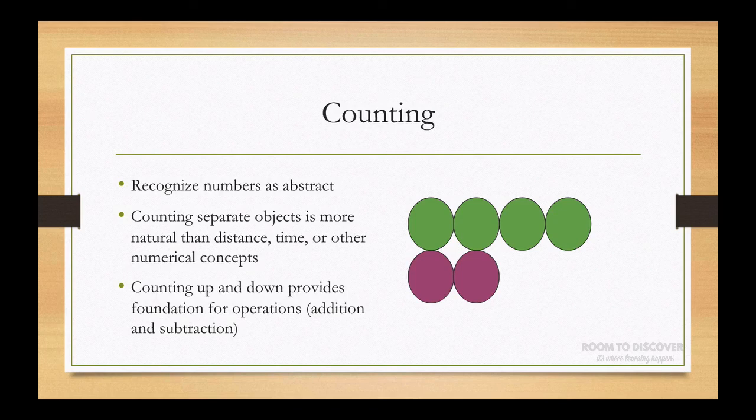When we're first introducing numbers, we start with counting. Counting seems pretty concrete, but it's actually abstract. The idea of numbers themselves are abstract. An apple is an actual thing, but being able to label one apple or thinking of it as two apples is pretty abstract. We need to keep that in mind when we introduce that to children.